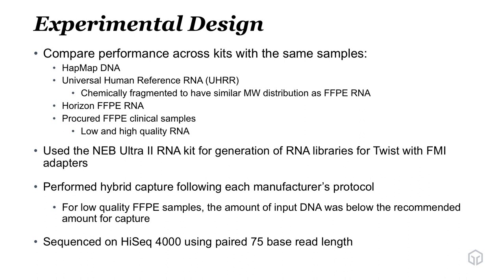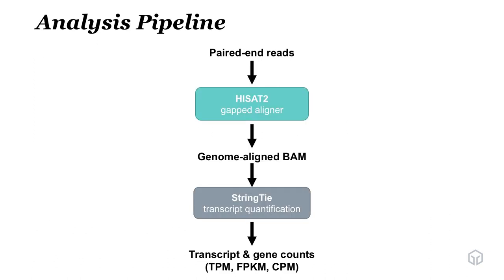We used a modification of the NEB Ultra 2 RNA kit to generate the libraries for TWIST with our own FMI adapters. We performed hybrid capture following each of the manufacturer's protocols — RNA Access as outlined and TWIST as outlined. For some of the really low quality FFPE samples, the amount of input DNA into the capture was below the recommended amount; for some samples we could only put in 85 nanograms. We sequenced on a HiSeq 4000 using paired 75 base read length, and for analysis we used HiSat2 as our gapped aligner and StringTie to do transcript quantitation.